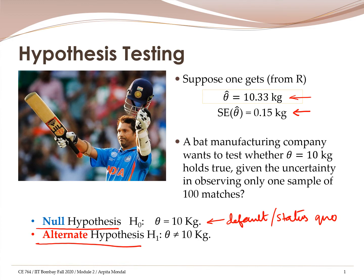When the alternate hypothesis involves a not-equal-to sign, meaning we do not want theta to be either greater than 10 kgs or less than 10 kgs, this type of test is called a two-tailed test. If the alternate hypothesis is a single inequality, we may be interested in a one-tailed test instead.